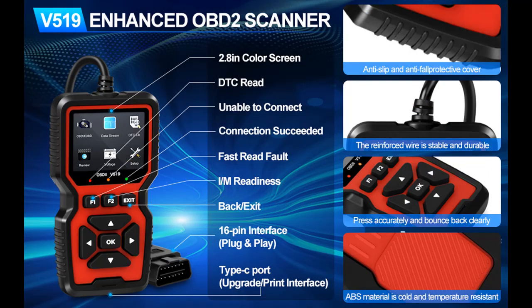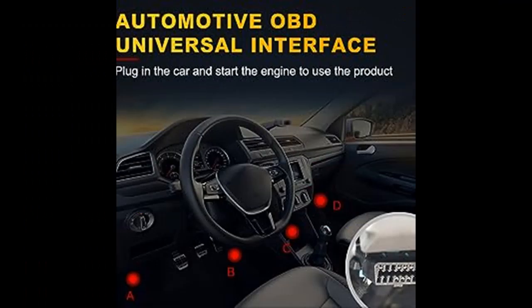The vehicle status indicator light of the OBD2 scanner is a visual cue that keeps you updated. It turns red when a fault is detected, yellow when there's an incompatibility or connection failure, and green when the car is successfully connected. With a quick glance, you'll always know what's happening.